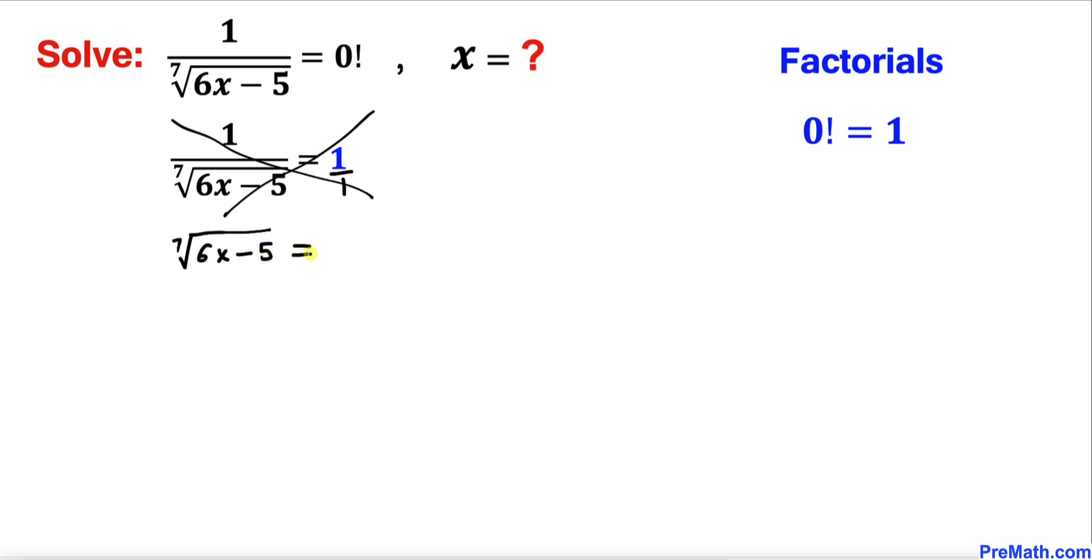Now let's go ahead and take power 7 on both sides. Now we can see this 7 and 7th root they undo each other, so we got on the left hand side simply 6x minus 5 equals to 1 to the power 7, which is always equal to 1.